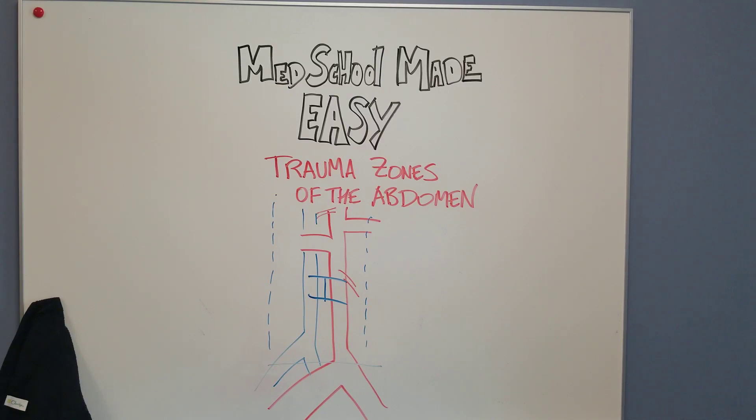So if you have a retroperitoneal hematoma and it's in zone one — meaning it's from the hiatus down to the sacral promontory and it's in the midline — it needs to be explored.